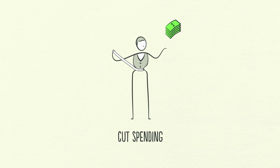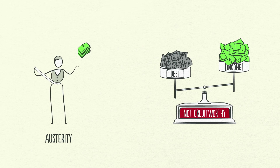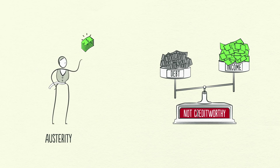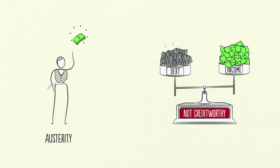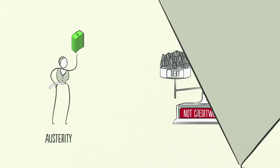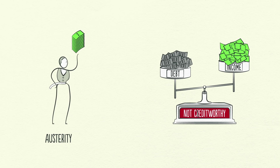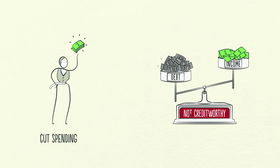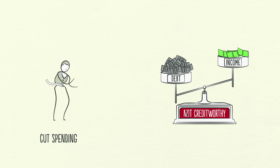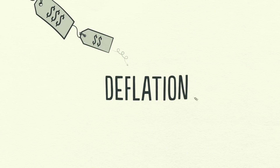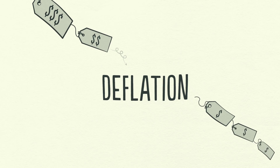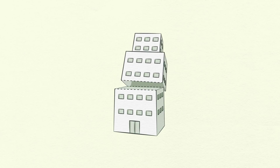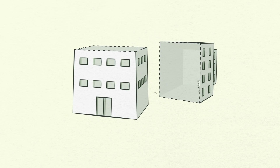This is often referred to as austerity. When borrowers stop taking on new debts and start paying down old debts, you might expect the debt burden to decrease. But the opposite happens. Because spending is cut and one man's spending is another man's income, it causes incomes to fall. They fall faster than debts are repaid and the debt burden actually gets worse. This cut in spending is deflationary and painful. Businesses are forced to cut costs, which means less jobs and higher unemployment.